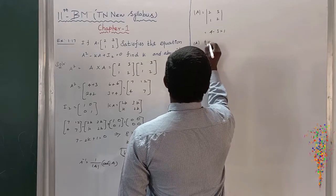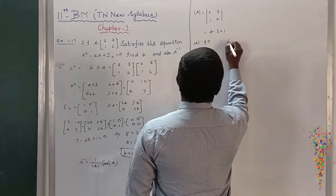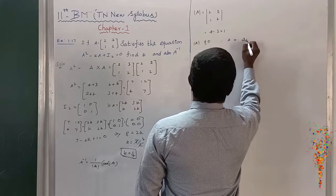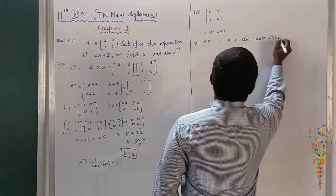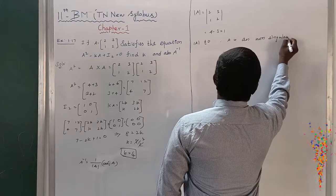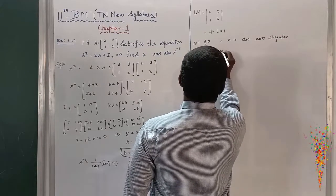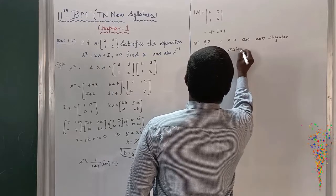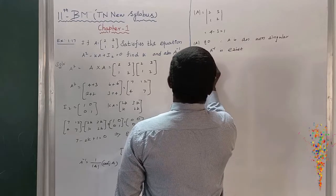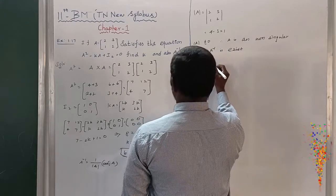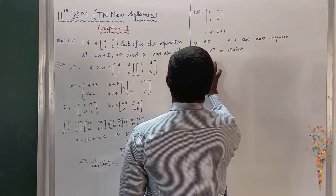Modulus of A does not equal to 0. Therefore, A is non-singular. Therefore, A inverse exists. A inverse = 1/|A| × adjoint A.